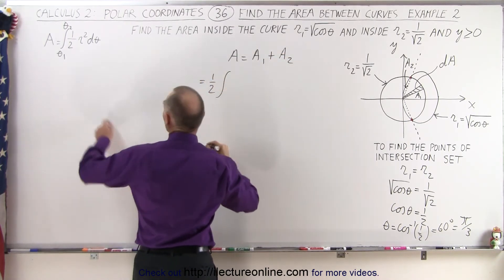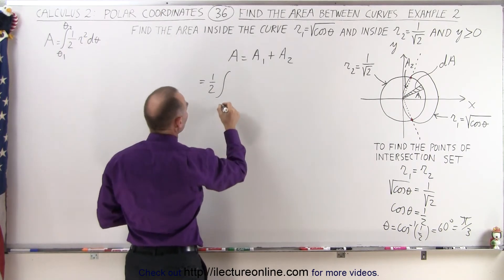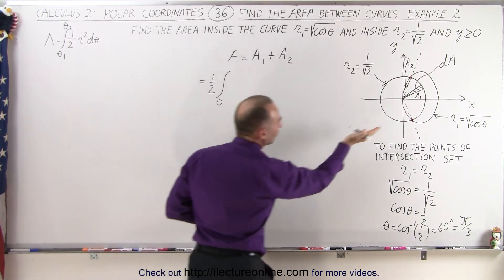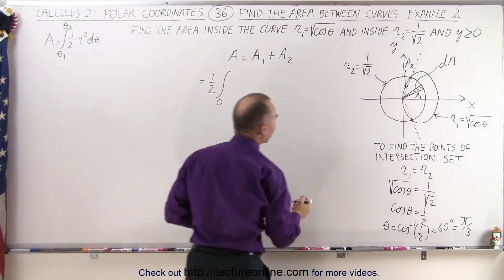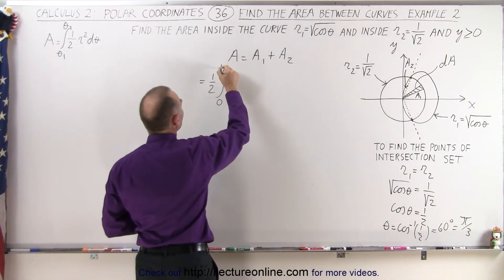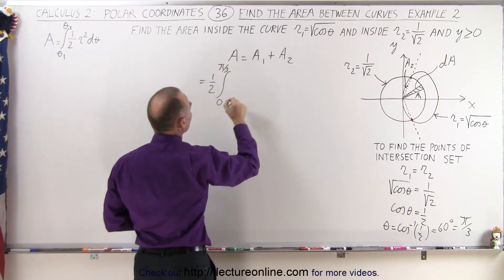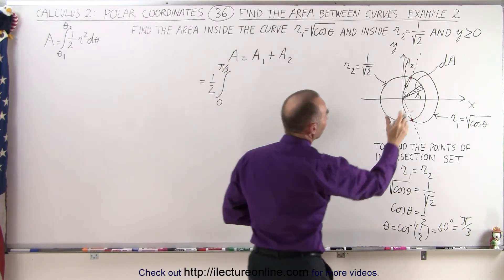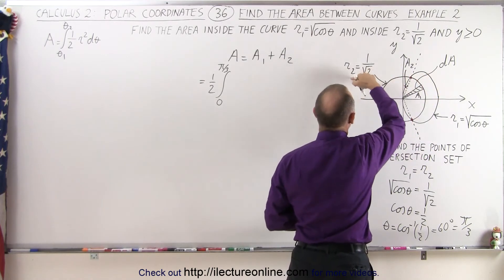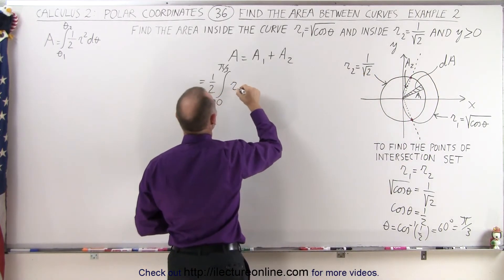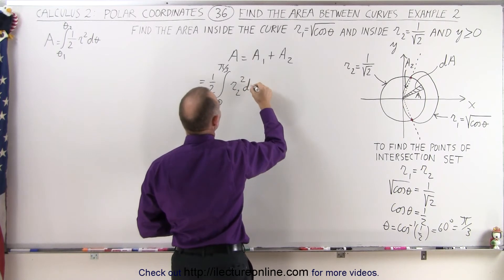We're going to use the general equation from theta equals 0, because we do not include the portion below the x-axis, only the portion above the x-axis, and the upper limit will be pi divided by 3. And we're going to then take this area element that's going to be constrained by the function R2, so we have R2 squared times d theta.